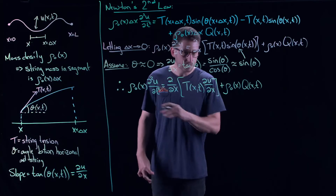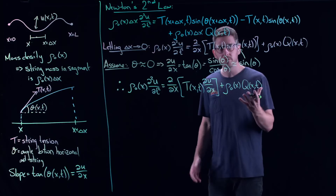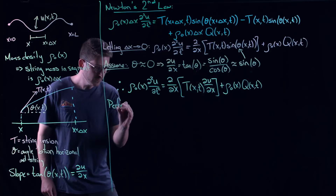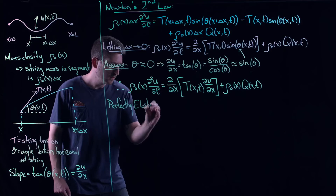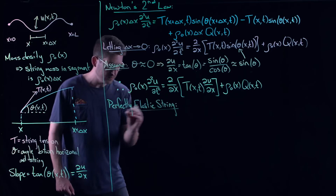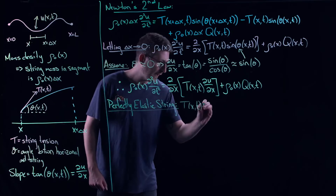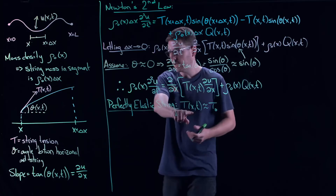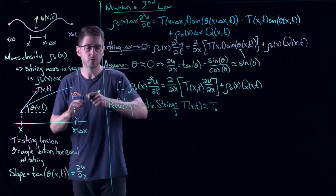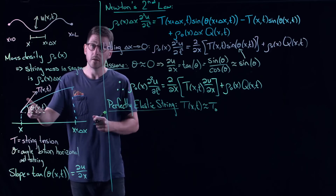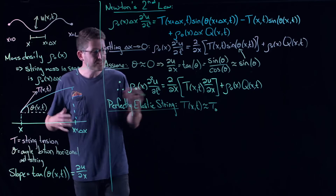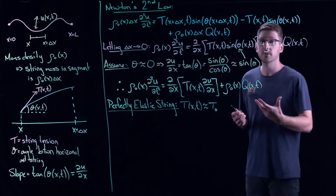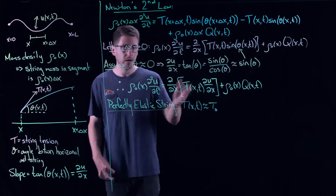Just as with the heat equation, we want to simplify further. We're going to look at a perfectly elastic string, which means we assume the tension T is just constant. Most real strings satisfy this — it means the string is a uniform material, and the force required to stretch or apply tension is the same at every point in space and time. This isn't a huge assumption; it's something most people would make unless they're an engineer specifically designing a non-uniform material.